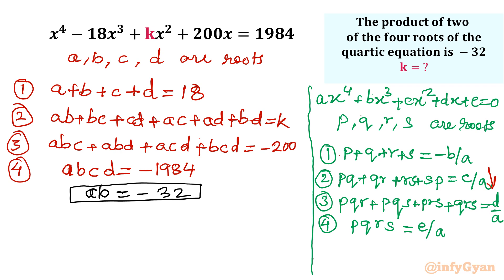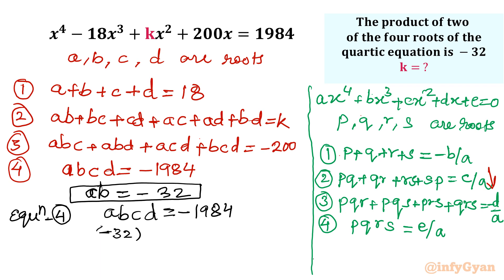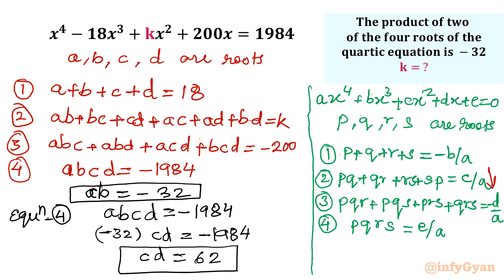Using equation 4, ABCD equals minus 1984. Substituting AB equals minus 32, we get minus 32 times CD equals minus 1984. Dividing both sides, CD equals 62. So we have the product of one pair of roots as minus 32 and the remaining pair as 62.